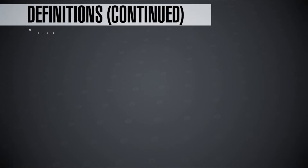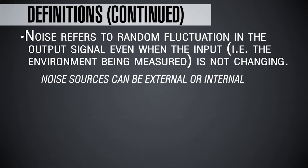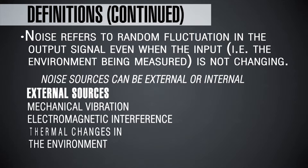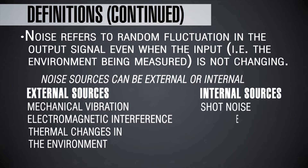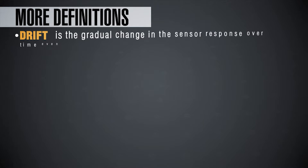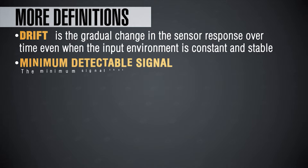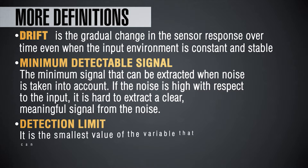Resolution is limited by the noise of the system. Noise is a random fluctuation in your output signal even when there is absolutely no change in the input. Noise can come from many different sources — mechanical vibration, electromagnetic interference, or thermal changes in the environment. Drift of the sensor is related to a gradual change in the sensor response over time, even when your input environment completely remains constant and stable. All sensors tend to have some small amount of drift over a period of time.